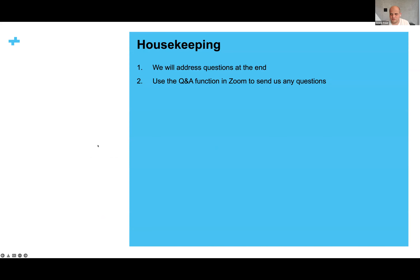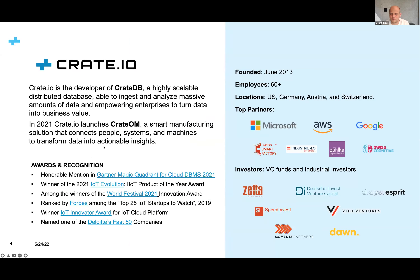Let me start with a short introduction about what CrateIO is and what we do. CrateIO is a company founded in 2013 out of Dornbirn in Vorarlberg, Austria. We now have locations in the US, Germany, Austria, and Switzerland, employing 60-plus people. Our main product is CrateDB, a highly scalable distributed database solution. Last year we also launched CrateOM, a smart manufacturing solution built on top of CrateDB that connects people, systems, and machines.